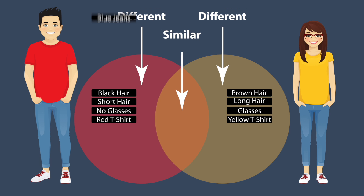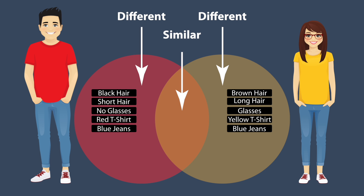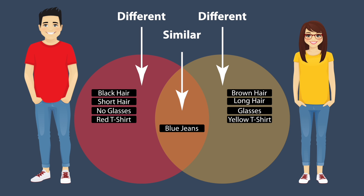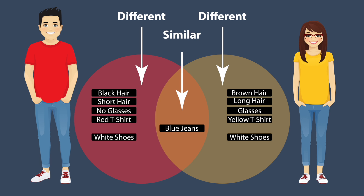The man is wearing blue jeans. The woman is wearing blue jeans. They are both wearing blue jeans, which is similar, so it goes in the overlapping part. The man is wearing white shoes. The woman is wearing white shoes. White shoes is a similarity, so it goes in the overlapping section. We found all the similarities and differences, and used a Venn Diagram to keep track.